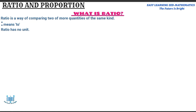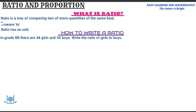Once I've said those three important points you need to consider, let's look at how to write a ratio. How do we write a ratio? If we are to write certain information in a ratio form, how do we write it? Let's take for instance this example. In grade 8B there are 48 girls and 36 boys. Write the ratio of girls to boys.